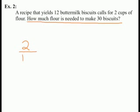Example 2: A recipe that yields 12 buttermilk biscuits calls for 2 cups of flour. How much flour is needed to make 30 biscuits? The first thing in a word problem is identify what the question is. Here we are asked how much flour is needed to make 30 biscuits. We know that it takes 2 cups of flour to make 12 biscuits, so we can write that as a ratio: 2 to 12.